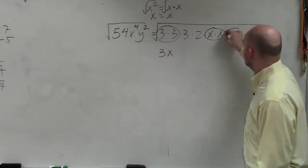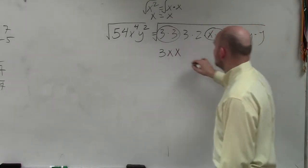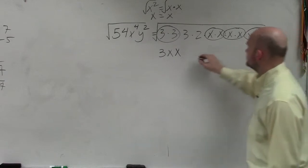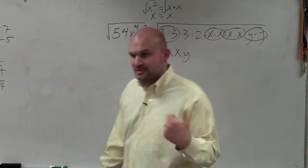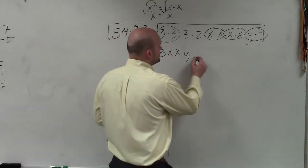I can take the square root of x times x, which is x, square root of x times x, which is x, and square root of y times y, which is y. Now, the only thing I could not pair is 3 and the 2, so those have to remain under the radical.